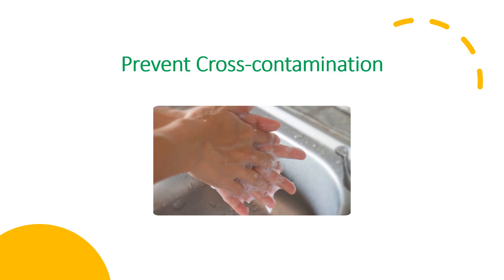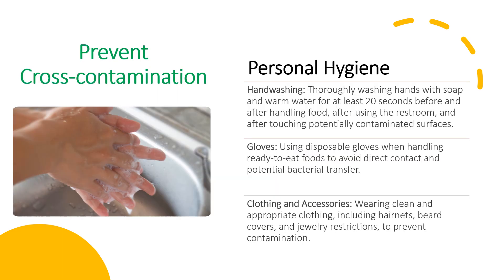Preventing cross-contamination in the food industry can significantly reduce the risk of foodborne illness. The Food and Drug Administration outlines recommendations for preventing cross-contamination, emphasizing their importance in safeguarding public health. Proper personal hygiene is fundamental: thoroughly wash hands with soap and warm water for at least 20 seconds before and after handling food, after using the restroom, and after touching potentially contaminated surfaces. Use disposable gloves when handling ready-to-eat foods, and wear clean and appropriate clothing, including hairnets, beard covers, with jewelry restrictions, to prevent contamination.